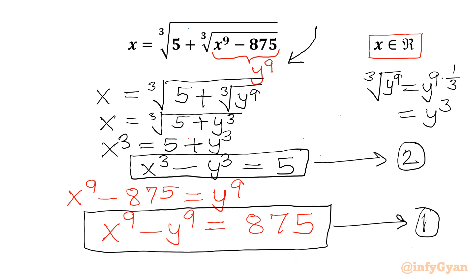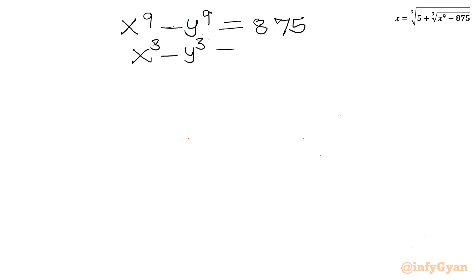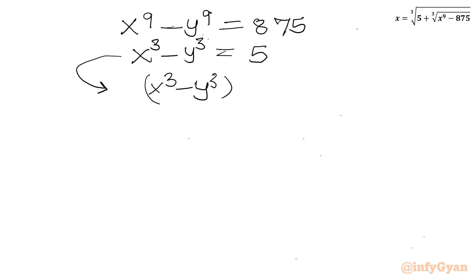Now we have to solve these two equations for the value of x. We have x to the power 9 minus y to the power 9 equal to 875, and x cubed minus y cubed equal to 5. I will cube equation 2, so let me write x cubed minus y cubed, whole cubed, equal to 5 cubed.